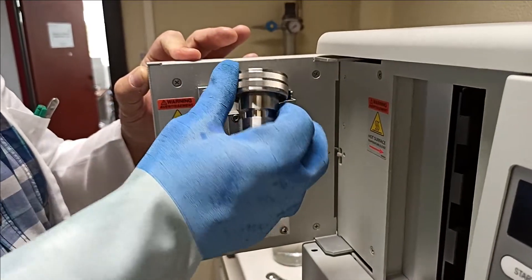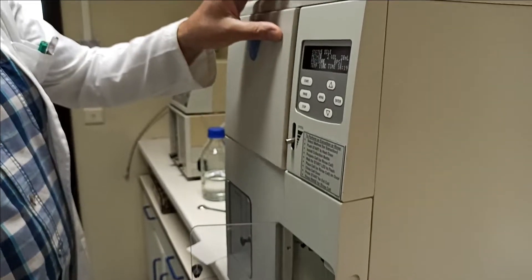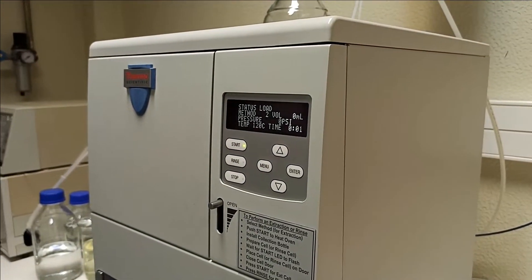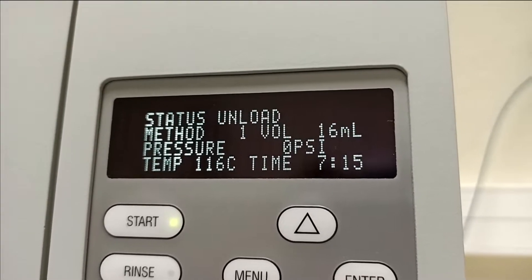Now open the oven chamber and insert the sample cell containing your microalgae culture. Press start to initiate the first extraction cycle. The solvent will now run through your sample.